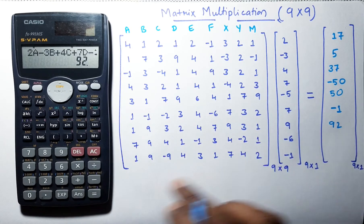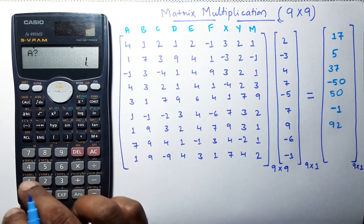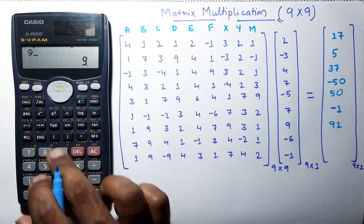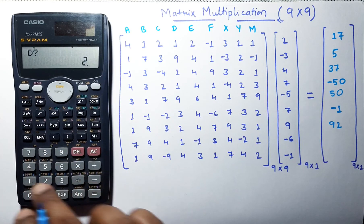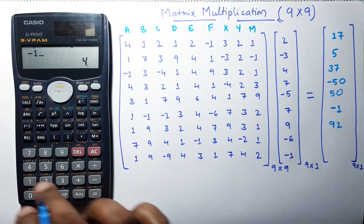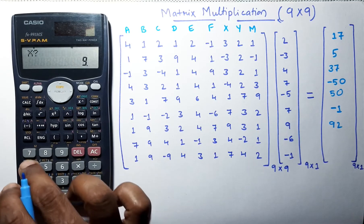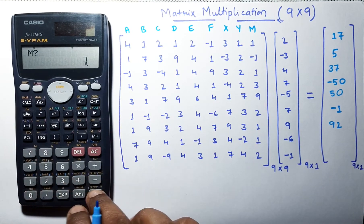Let us enter the next row: 7, 9, 4, 1, minus 1, 3, 4, minus 2, and 1.